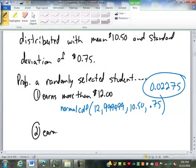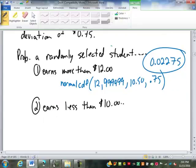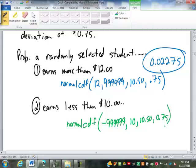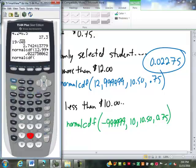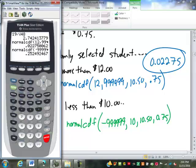Two, earns less than $10 per hour. So this is going to be normalcdf. Less than would be negative infinity. We're going from negative six nines again to 10, with a mean of 10.50, standard deviation of .75. Make sure you use that key for the negative by the way, not just minus, otherwise it will cause problems. We get .2525.